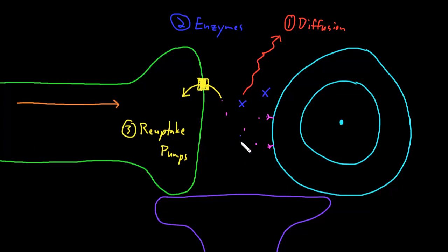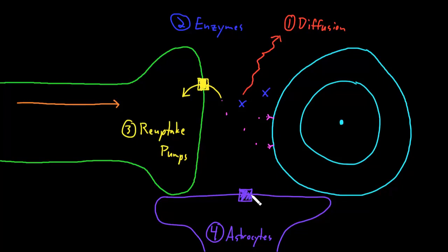Another major method of actively removing neurotransmitter from the synapse is by astrocyte end feet. The astrocytes in the central nervous system put their end feet on many of the synapses in the central nervous system, and they also have pumps at many of these synapses that can actively pump the neurotransmitter out of the synapse into the astrocyte. Sometimes it will just be broken down or used in the astrocyte, or sometimes the astrocyte will actually transfer some of the substances of the neurotransmitters back into the axon terminal of the neuron, where it will be recycled and used again for neurotransmission.